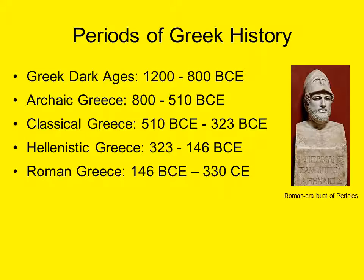Hellenistic Greece is a period that begins with the conquests of Alexander the Great and ends with the conquest of Greek territories by the Romans. Many observers have traditionally viewed this period as one of decline or even decay, but it should be mentioned that this era was not without its scientific and artistic achievements. The term Hellenistic is derived from Hellen, the Greeks' traditional name for themselves, and historians have used this term to reflect the wider spread of Greek culture throughout the Mediterranean world, though some historians prefer not to use this term.